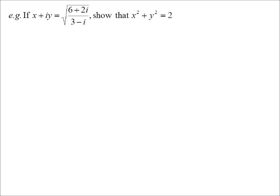So I'm going to do it using conjugates. So if x+iy is the square root of (6+2i)/(3-i), then when I square it I'll get rid of the square root side. I mean that's kind of obvious. So that's the first relationship I want to have a look at.